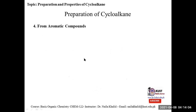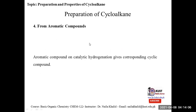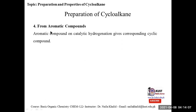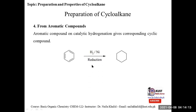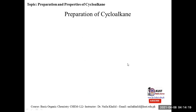The fourth method for the preparation of cycloalkane is from aromatic compounds. You take any aromatic compound, perform its catalytic hydrogenation, and it will be converted into its corresponding cyclohexane.